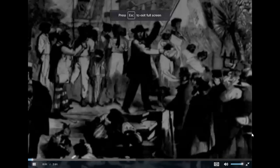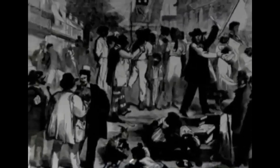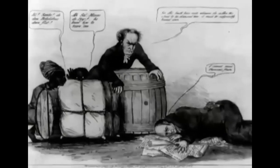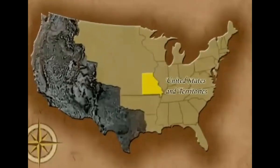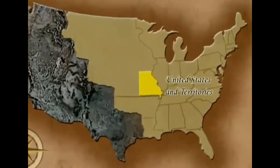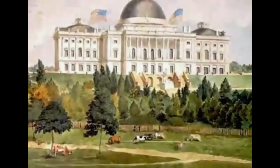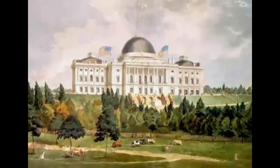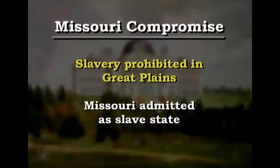Now let's watch a video about growing sectionalism during this time period. Growing sectionalism in the 1820s splintered American unity. With different economies and opposing views on slavery, northern and southern leaders sharply disagreed on national issues. Missouri's admission to the Union sparked a heated debate over slavery in the western territories. The Missouri Compromise of 1820 prohibited slavery in the unorganized territory of the Great Plains but allowed Missouri to be admitted as a slave state.